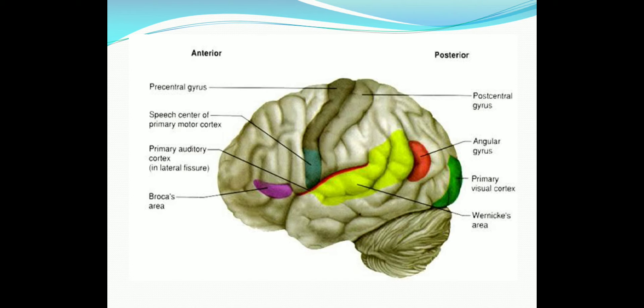Temporal lobe of the cerebrum and the cerebellum are the commonest sites of brain abscess. If the dominant cerebral hemisphere is involved, it damages the Wernicke's area — located in the temporal lobe — resulting in defective comprehension, that is difficulty understanding what others are saying, but speech remains fluent. As the abscess extends further, it may lead to homonymous hemianopia due to pressure on the optic radiation, contralateral motor paralysis, and epileptic fits.